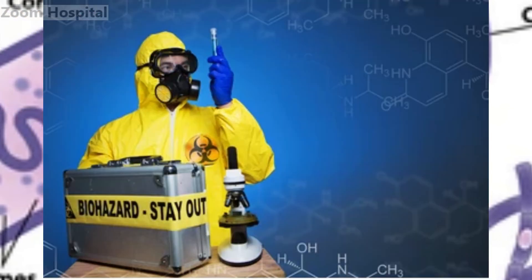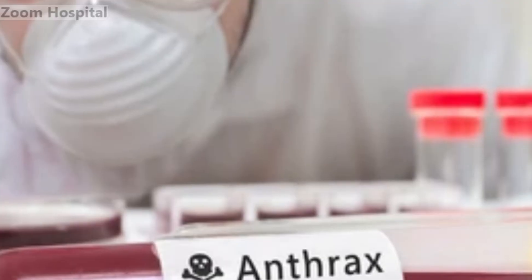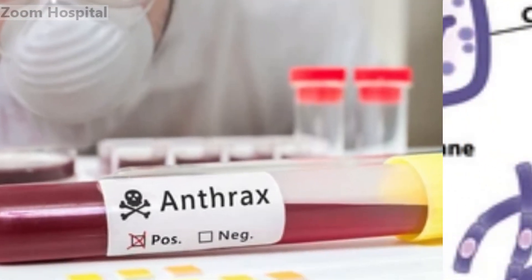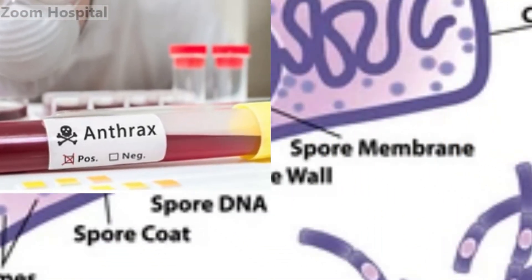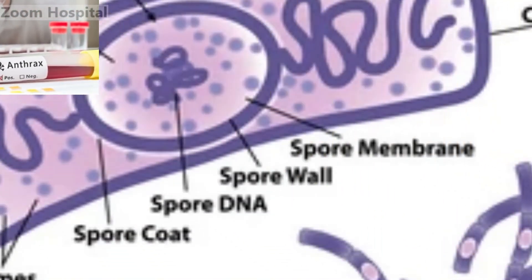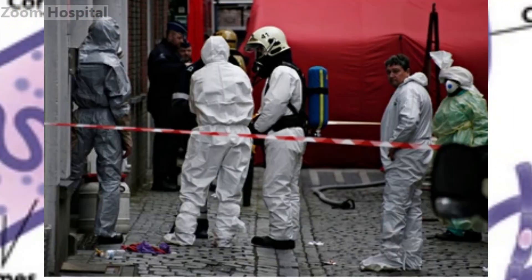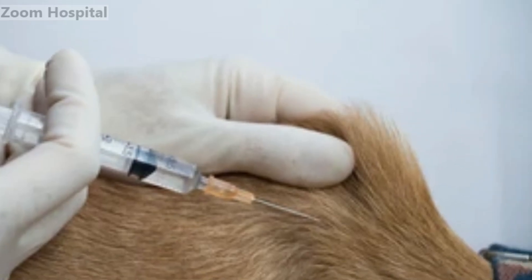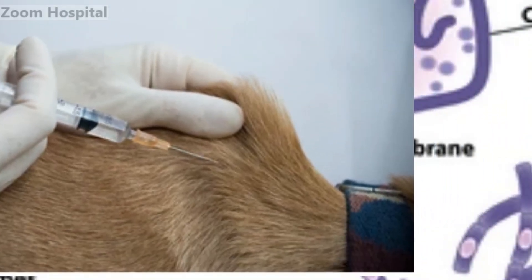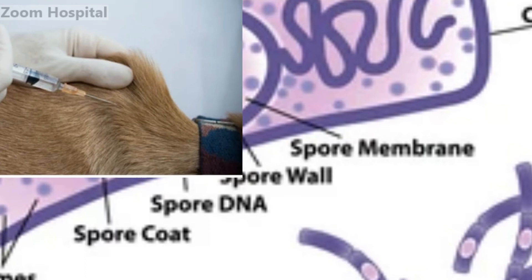4. Protective clothing. Individuals working in high-risk occupations, such as veterinarians or laboratory personnel, should use appropriate protective clothing, including gloves, masks, and goggles, when handling potentially infected animals or specimens.